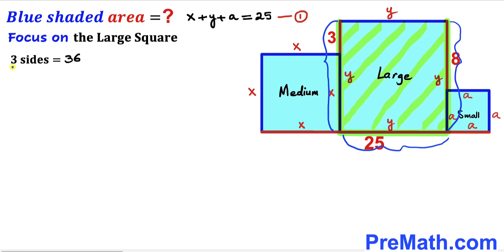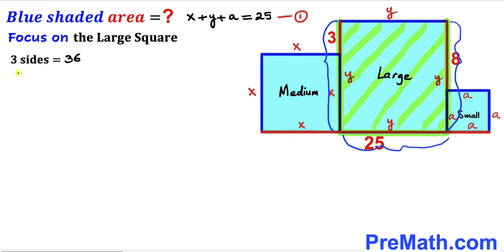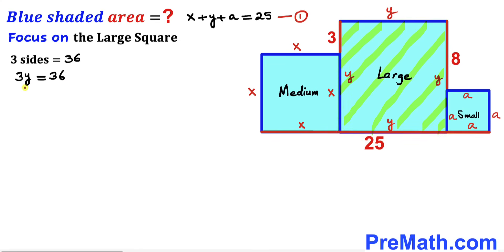Now let's focus on those three sides of the large square. We can see they are y plus y plus y, so the left-hand side is 3y, which equals 36. Dividing both sides by 3, our y value turns out to be 12 units.